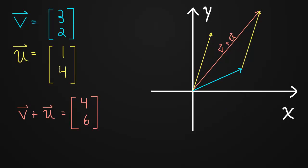Which makes sense if we think about it. v took us over 3 in the x direction, and u took us over one more, so that would be 4. So the new vector v plus u went over 4 in x. And we could do a similar thing to show that it went up 6 in y.